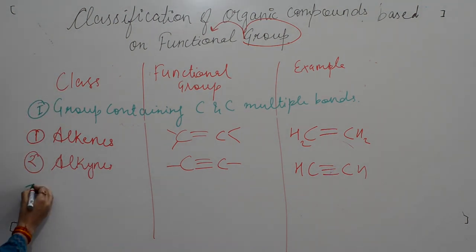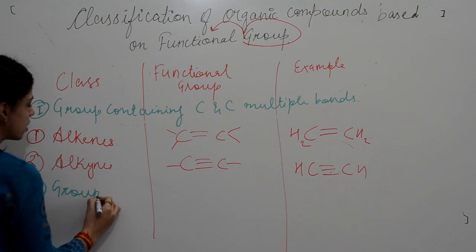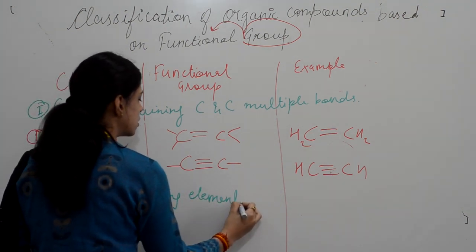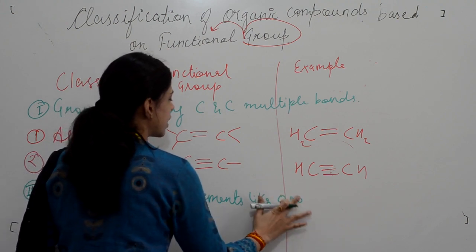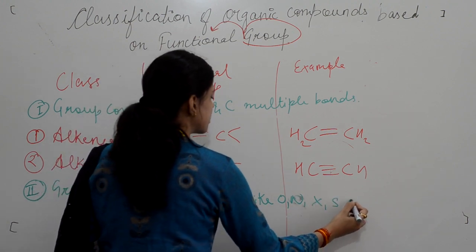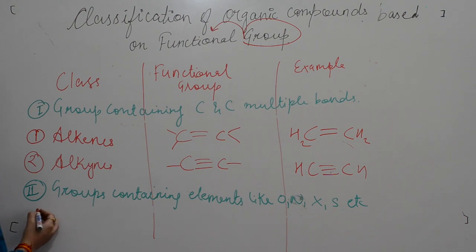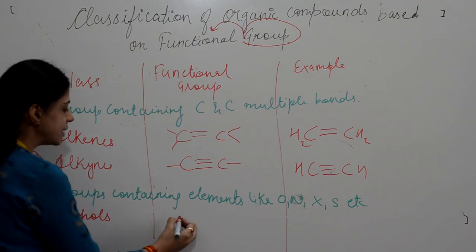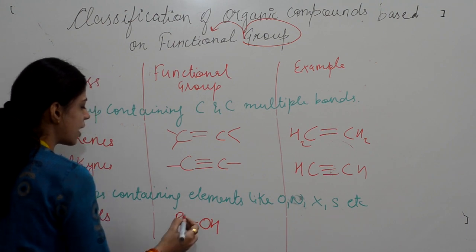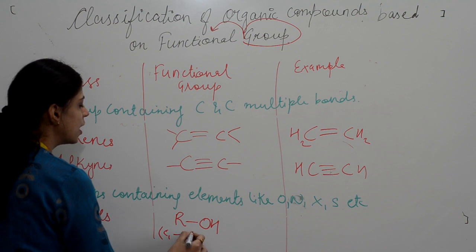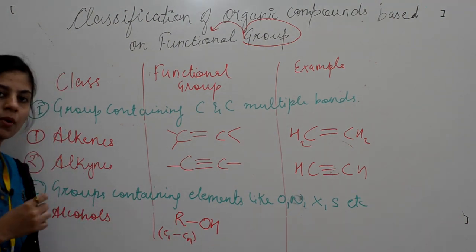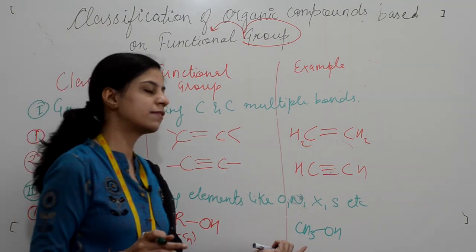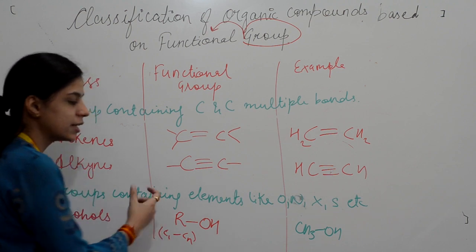The second category is groups containing elements like oxygen, nitrogen, halogen, sulphur, etc. The first example in this category is alcohols — compounds containing a hydroxyl group (OH) as a functional group attached to an alkyl chain. The alkyl chain can range from C1 to Cn. A simple example is CH3OH, which is methanol.